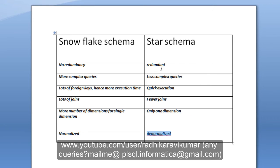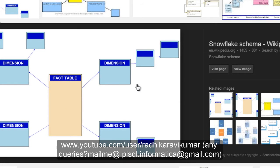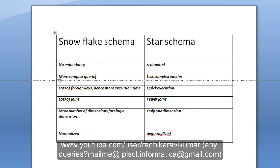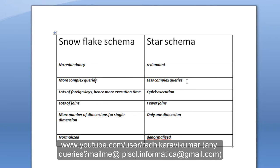Coming to the second difference: the snowflake schema, being a normalized form, requires more number of queries. Whenever you want to fetch some data, you need to join tables using multiple sub-queries and joins, making the query more complex. In the star schema, it's just the reverse — since it's in denormalized form, only a single table is generally present and a simple query is enough to fetch the data.